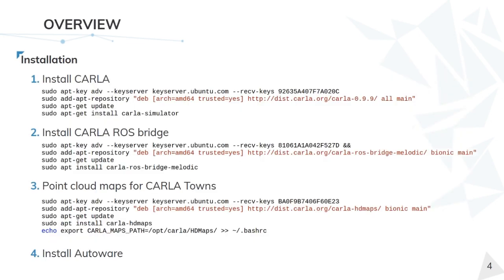Now let's look at the installation process. We need to install Carla, the Carla ROS bridge, point cloud maps for the Carla towns, and the Autoware stack. In the notes of this presentation you have a link to the Carla Autoware bridge repository where you will find how to install everything step by step, as well as all the dependencies you need in order to start playing with Carla and Autoware.